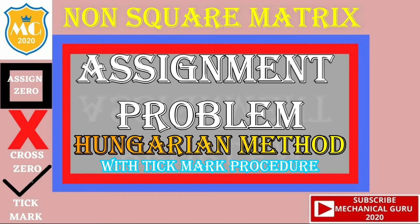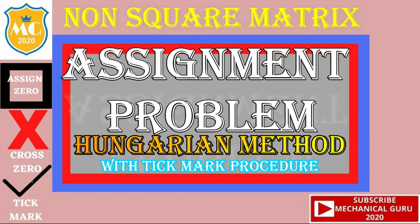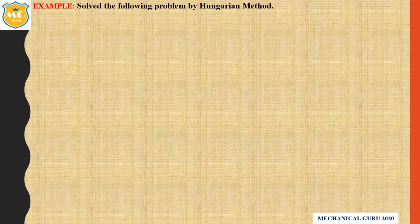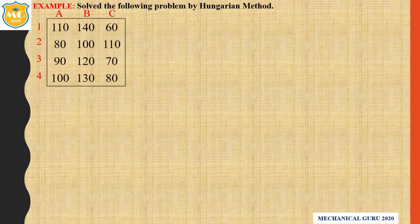Now I will go to the assignment problem. Solve the following problem by the Hungarian method. Here we have 3 columns and 4 rows, so we have to follow the Hungarian steps.